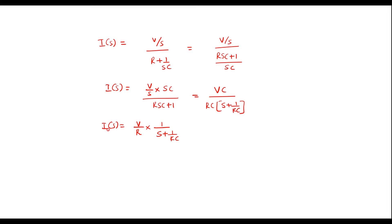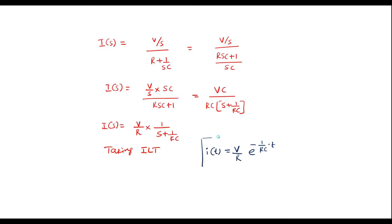Now let's take the inverse Laplace transform. I of T is equal to V by R — which is constant — times E power minus A T, where A is 1 over RC into T. This is the same as the previous expression. So this is the current expression for the given RC circuit. Thank you for watching.